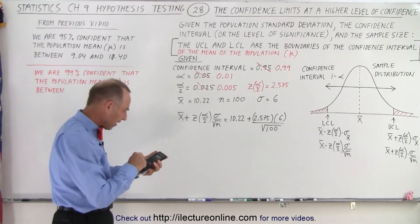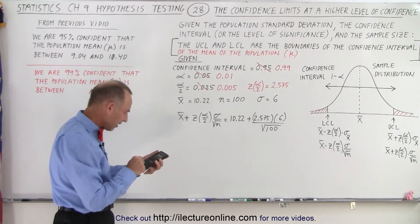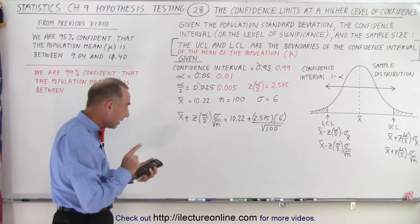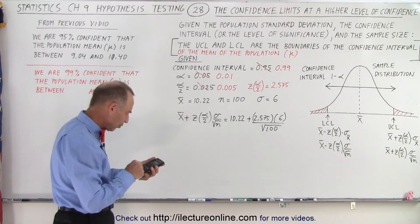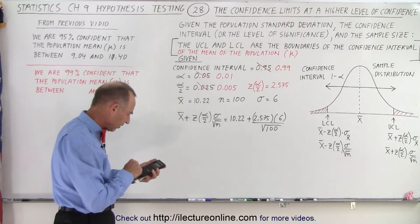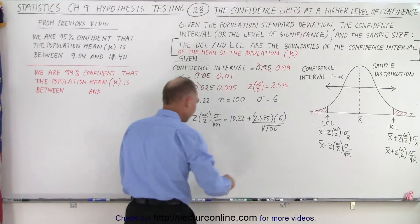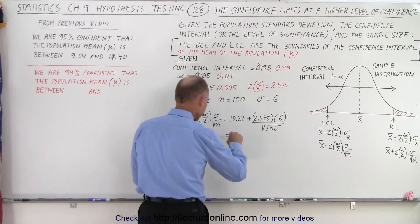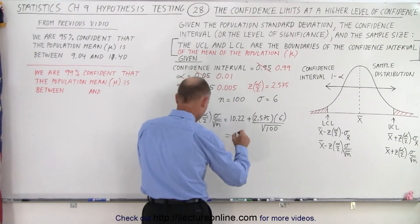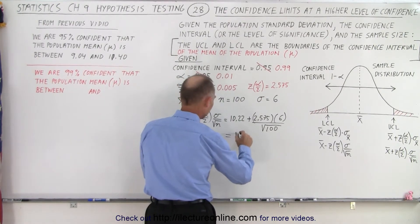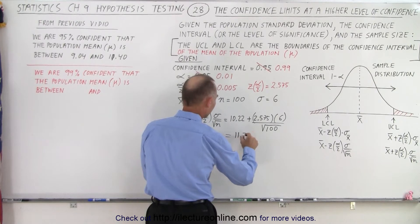So 2.575 times 6 divided by 10, and we add that to 10.22, and we get an upper limit of 11.77.